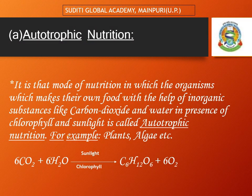Autotrophic nutrition — auto means self. It is that mode of nutrition in which organisms make their own food with the help of inorganic substances like carbon dioxide and water, in the presence of chlorophyll and sunlight. This is called autotrophic nutrition. For example, plants, algae, etc.